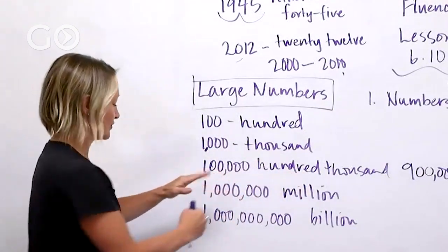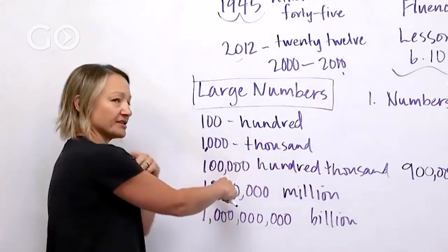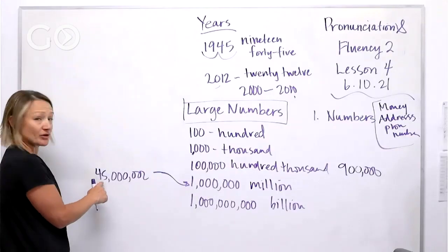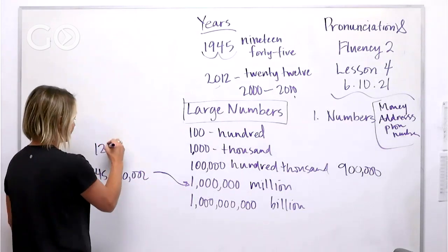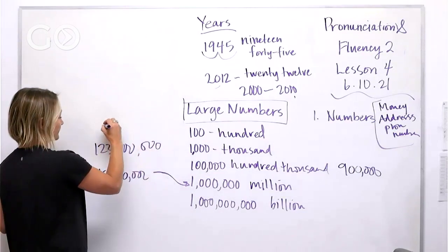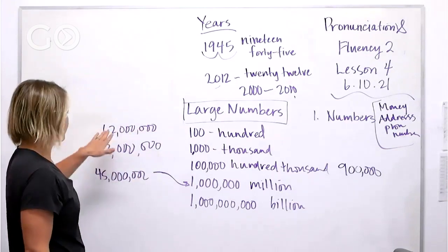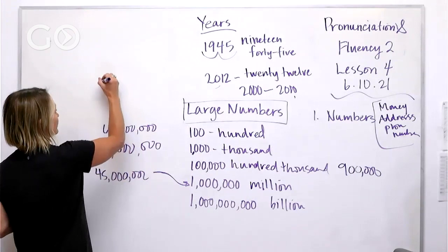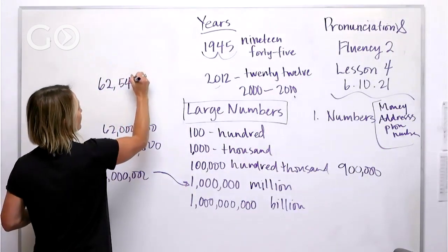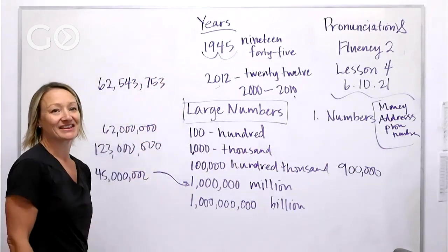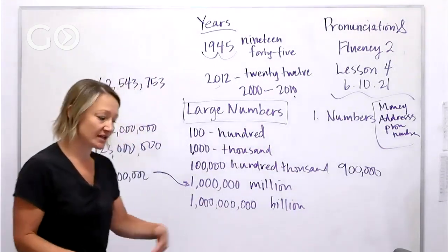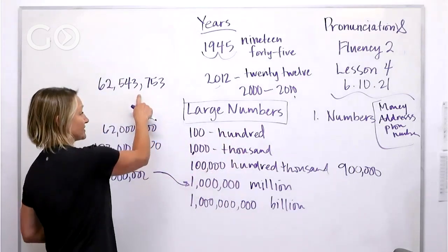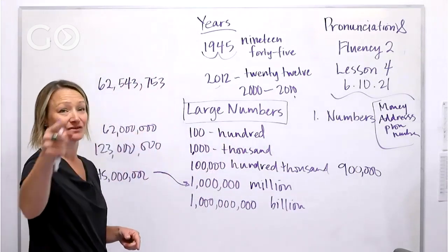For millions, you say the first part and then 'million.' So 45 million, 123 million, 62 million. If there's nothing after, you stop there. But if there is something after — like 62,543,753 — you say '62 million, five hundred and forty-three thousand, seven hundred and fifty-three.' Everyone needs to practice this, even native speakers.